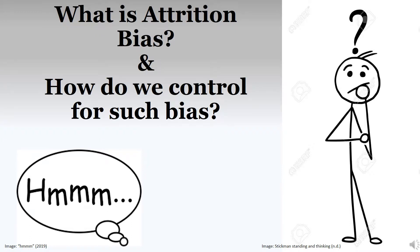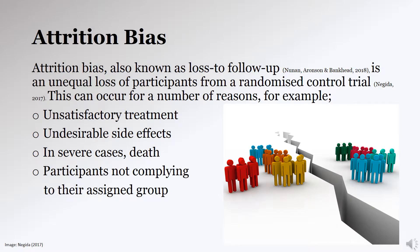So what is attrition bias and how do we control for such bias in research? Attrition bias, also commonly known as loss to follow-up, is an unequal loss of participants from a randomized controlled trial.